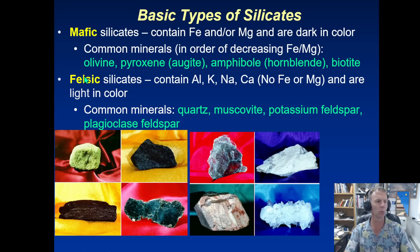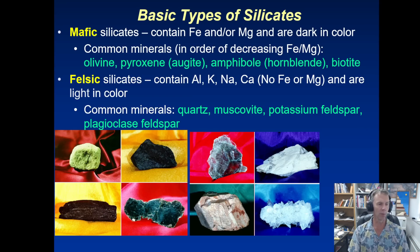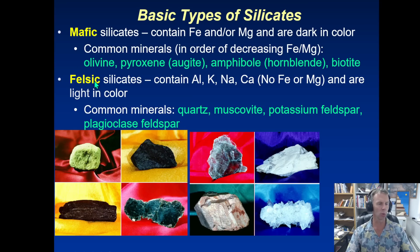Felsic and mafic are terms that will be helpful as we get into igneous rocks and even when we start talking about volcanoes. Some volcanoes have dominantly mafic magmas, and so when those magmas cool and crystallize, they dominantly contain mafic silicates. You can tell a lot about rocks by looking at their composition of mafic and/or felsic silicate minerals — mafic generally being dark in color, felsic generally being quite light in color.